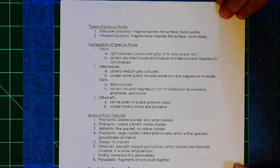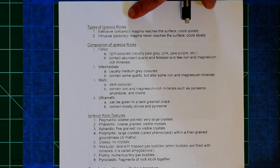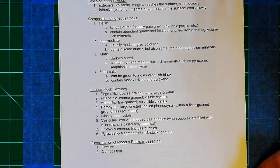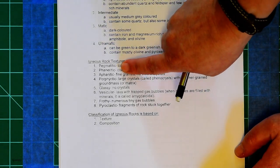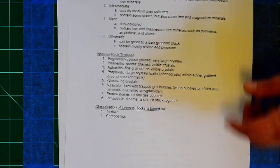I also in here have reminders of some of the ways we identify these igneous rocks, looking at the composition—felsic, intermediate, mafic, or ultramafic—and then of course those different textures that are used for identifying them.